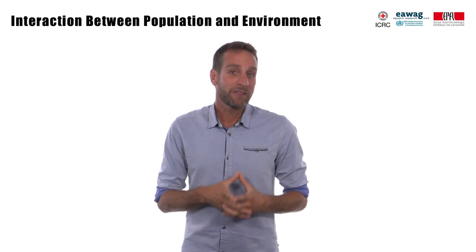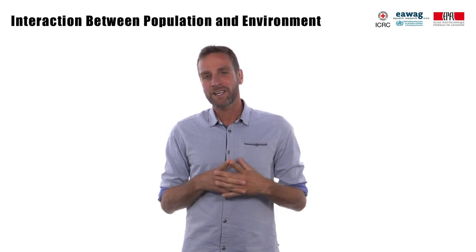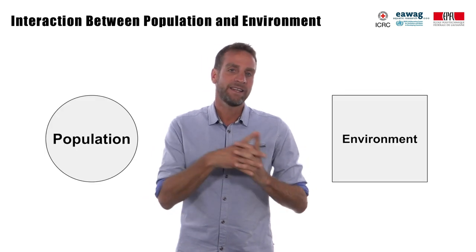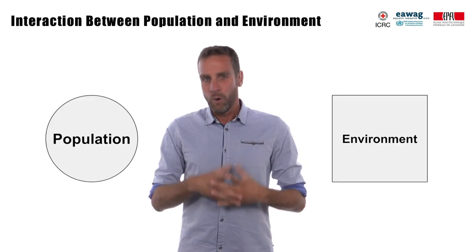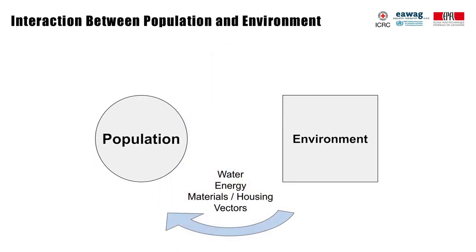In order to understand the role of the public health engineer, we have to look at the interaction between a population and its environment. This can be schematized in the following diagram. On one side, we see the elements originating in the environment which are necessary to maintain a population's life and health, such as water, food, energy, raw materials for work, materials for building a shelter, and also vectors of diseases such as rats and mosquitoes.